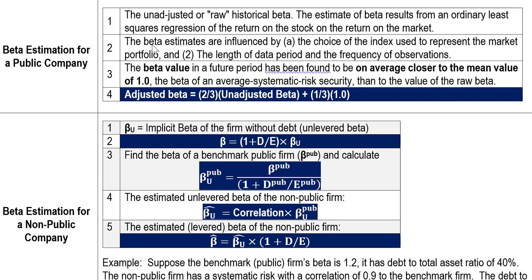The simple estimate from historical data will be influenced by the choice of index used to represent the market portfolio — that is, what benchmark you use. Most people use the S&P 500 index, but some argue that for stocks related to smaller companies, the S&P 500, which is large-cap, may not be appropriate. What about small-cap or international stocks? Choosing the appropriate benchmark for calculating beta is very important and varies by firm type.